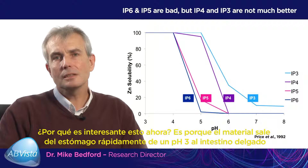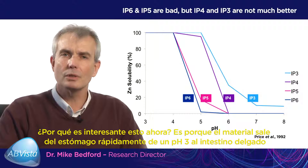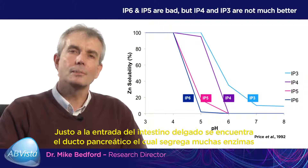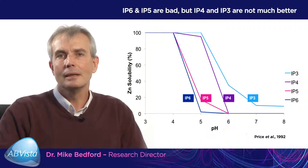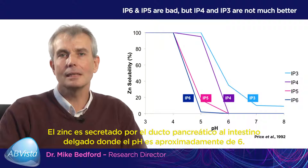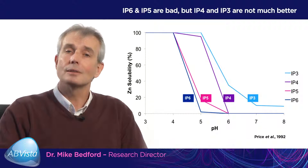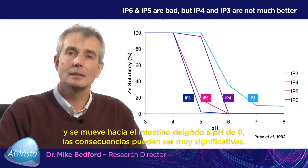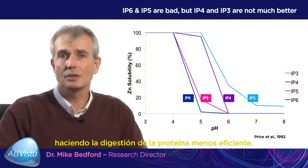Why is this interesting? The pH in the small intestine, as material moves out of the stomach, rapidly moves up from pH 3 to about pH 6 in a very short period of time. Right at the entrance into the small intestine, there is the pancreatic duct secreting enzymes involved in protein digestion — trypsin, chymotrypsin, and elastase. All of these enzymes require zinc as a cofactor. This zinc is secreted out of the pancreatic duct into the small intestine where the pH is roughly 6. If we have IP4 and IP3 coming out of the stomach, they move into the small intestine at pH 6 where the zinc appears from the pancreatic duct, and the consequences could be quite significant. Precipitation of the zinc would thereby reduce the activity of these proteases, making protein digestion less efficient.